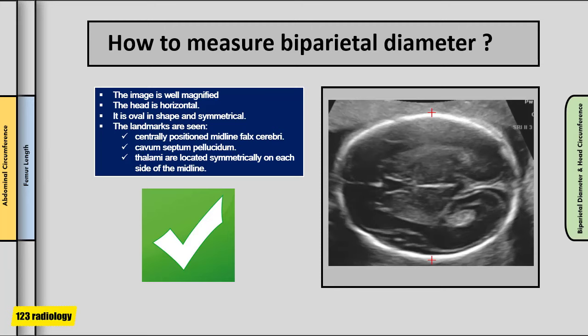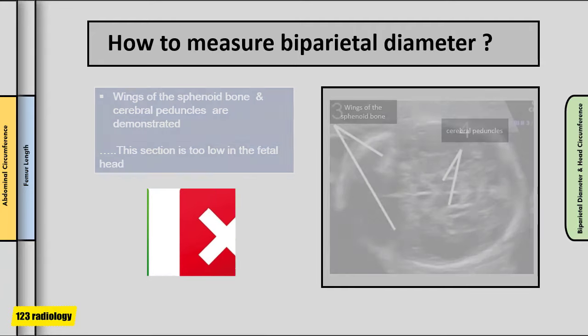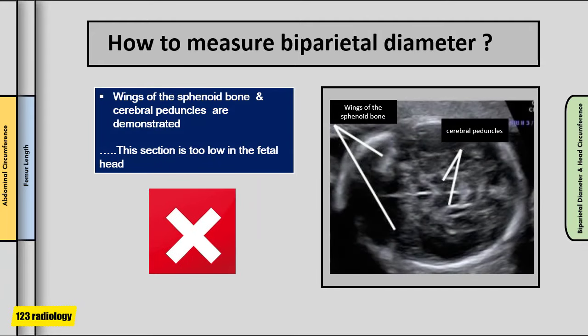This is an example of correct biparietal diameter estimation. The image is well magnified, the head is horizontal and oval in shape, symmetrical, and the landmarks are seen clearly. The falx cerebri is centrally positioned as a continuous midline echo, broken anteriorly by the cavum septum pellucidum, and the thalami are located symmetrically. Calipers are placed outer to outer. In the incorrect example, the wings of the sphenoid bone and cerebral peduncles are visible — this section is too low in the fetal head, leading to incorrect estimation.